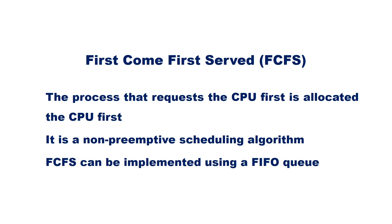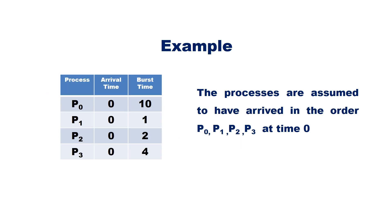FCFS policy can be easily implemented using a first-in-first-out queue. When a process becomes ready, its PCB is linked to the end of the ready queue, and it is allocated the CPU at the head of the queue. Consider processes P0, P1, P2, and P3. The CPU burst times are: P0 = 10ms, P1 = 1ms, P2 = 2ms, and P3 = 4ms. The processes are assumed to have arrived in the order P0, P1, P2, P3 at time 0.